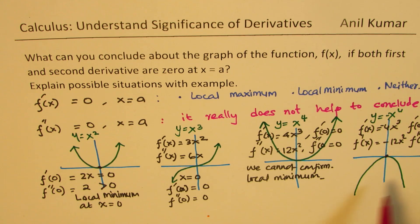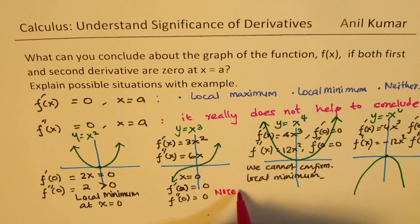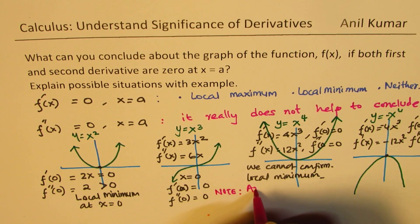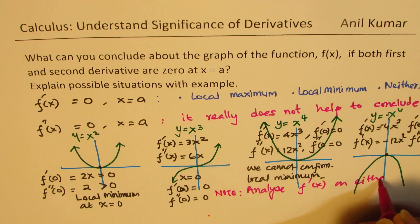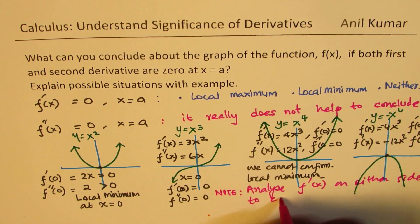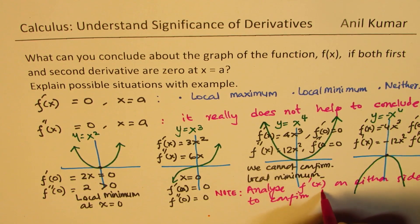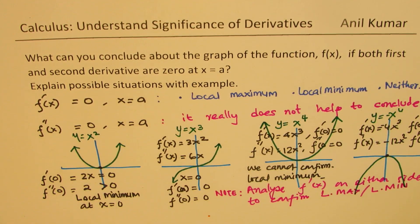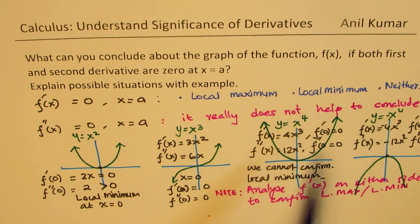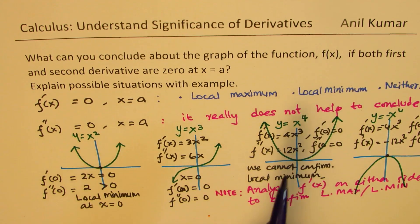So what do we do in this case? It is important to understand: you need to analyze the first derivative on either side of x equals a to confirm a local maximum or local minimum. The second derivative being 0 does not help. You have to check for maximum or minimum by analyzing the first derivative. Only if the second derivative is not 0 can we conclude directly.